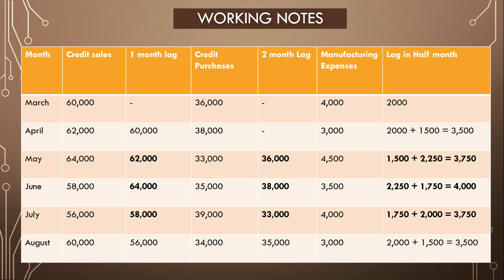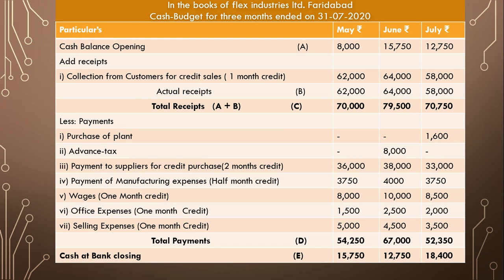We have to prepare the budget for three months — only for May, June, and July. So we will take only those three months' figures which we have calculated in the working note: 62,000, 64,000, and 58,000. These are our actual collections from customers.